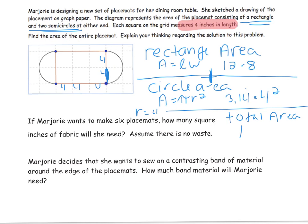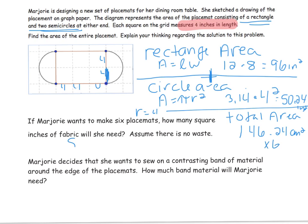Please pause the video and do the calculations. Alright, so I took my length times my width, I took pi times r squared, and I added them together. Then the next question says: what if she wants to make 6? How many square inches will she need? Assume there is no waste — we're not going to consider any waste. So we multiply by 6 to get 877.44 inches squared. So here's my answer for the single placemat, and then I took times 6 to get the total.